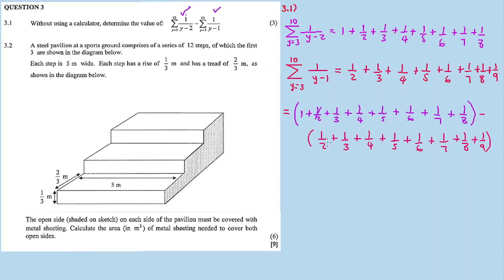Subtracting: 1 over 2, 1 over 3, 1 over 4, 1 over 5 — these all cancel out. What remains is 1 minus 1 over 9. Simplifying: (9 times 1) minus 1 over 9, which is 9 minus 1 over 9. So the answer is 8 over 9.